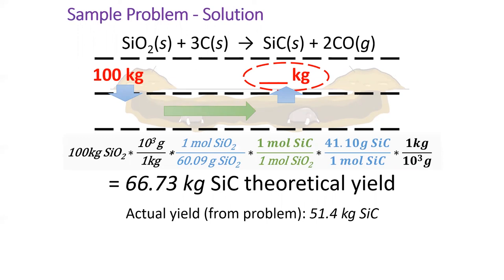If it's not, you've made a mistake. In this case, we're good because we had 66 kilograms of silicon carbide theoretically, which is more than the 51 kilograms of actual yield. Now,